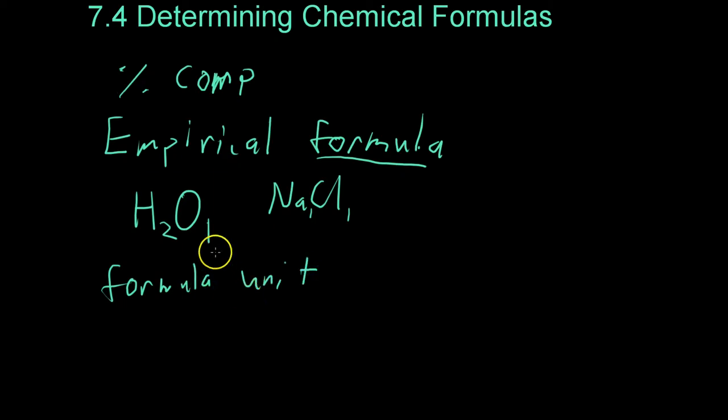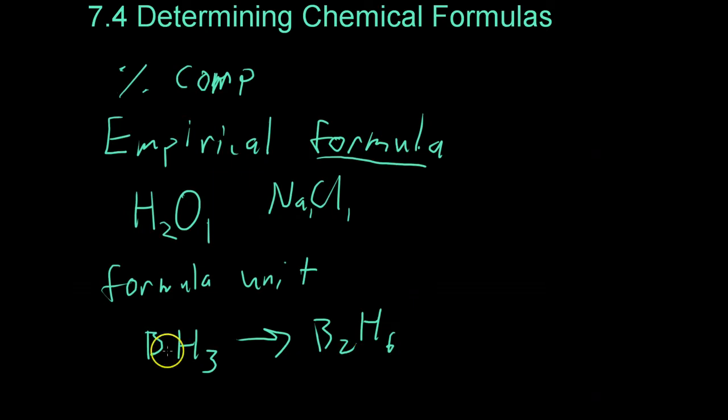For example, the gas diborane, which has the empirical formula BH3, when you look at it in nature, it actually has the structure of B2H6. However, because the percentage composition are the same for both of these,